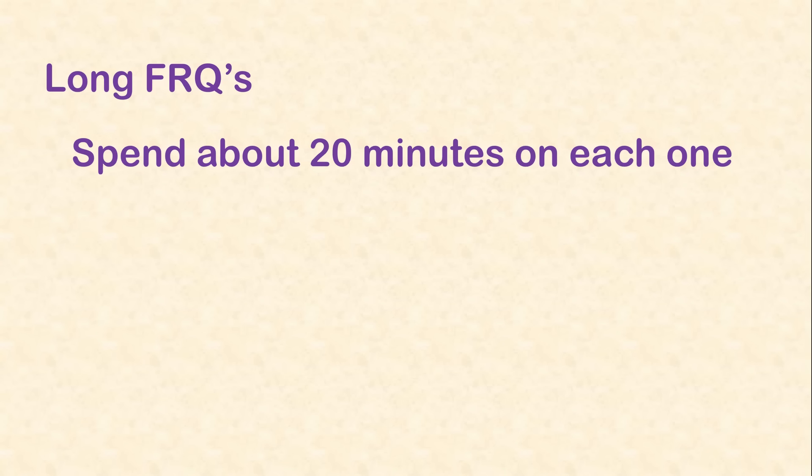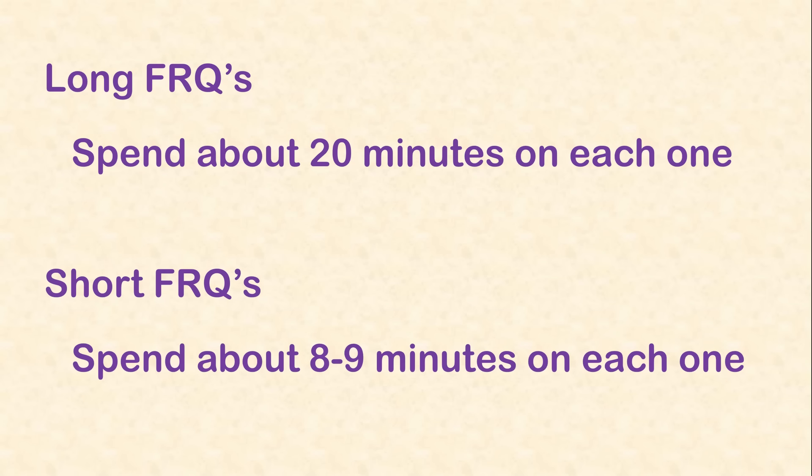The three long questions may be based on one general scenario or topic, but different parts will draw from various units of the course — for example, part A might be about equilibrium, part B about intermolecular forces, part C about thermodynamics. These are rapid-fire questions from different parts of the course. Don't spend more than about 20 minutes on any one long question. Each of the four shorter questions usually focuses on one or two units and is worth only four points each, so don't spend more than about eight or nine minutes on any one of those.